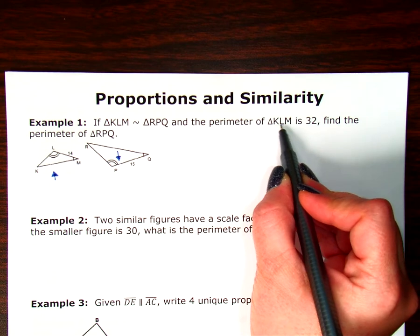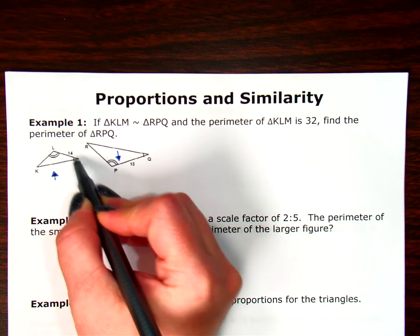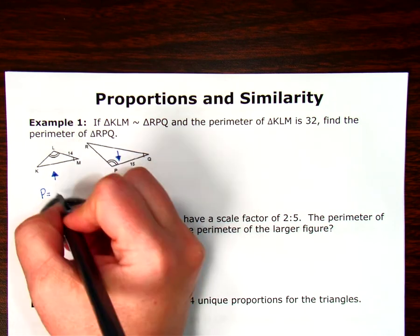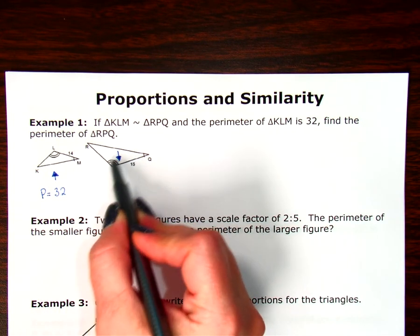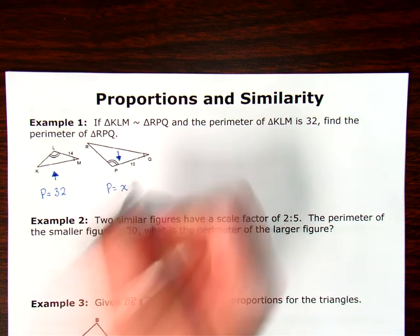The perimeter of KLM is 32. So even though I don't have all my sides of KLM, I know when I add them together, my perimeter here is 32. And I am trying to find the perimeter of RPQ.